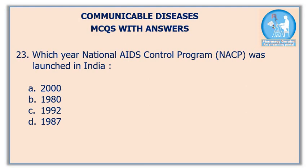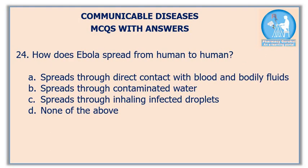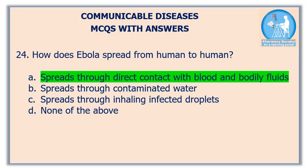Question number 23: which year was the National AIDS Control Program launched in India? The correct answer is option C: year 1992. Question number 24: how does the Ebola virus spread from human to human? The correct answer is option A: Ebola virus spreads through direct contact with blood and body fluids.